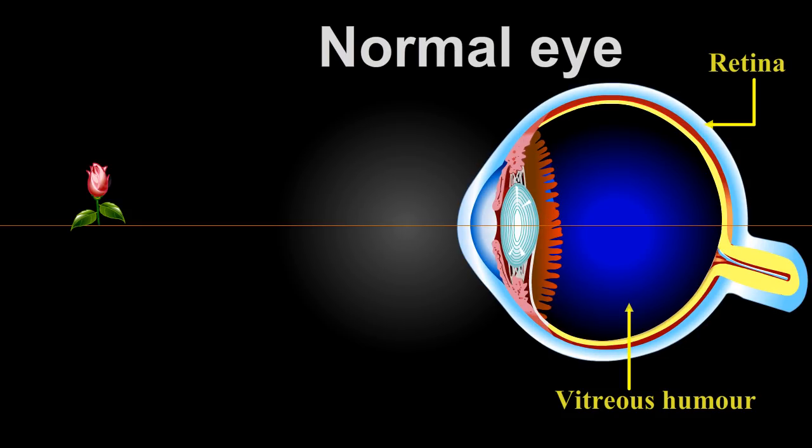Here you can see the formation of the image in a normal eye and in a myopic eye. In the case of a normal eye, the rays of light from the flower fall on the eye and converge on the retina.